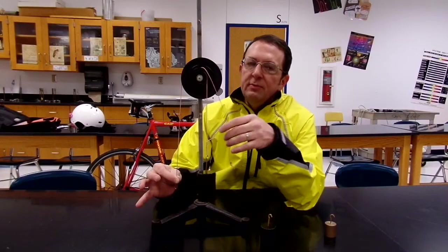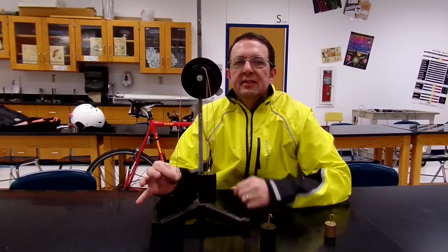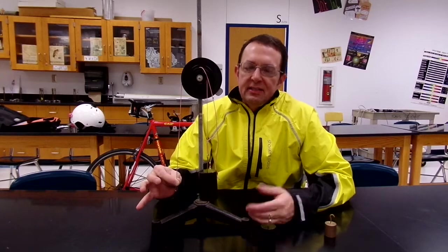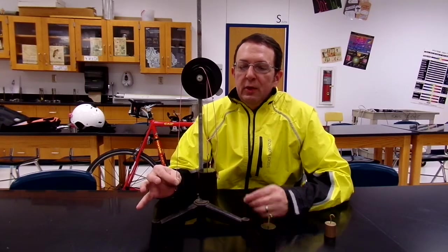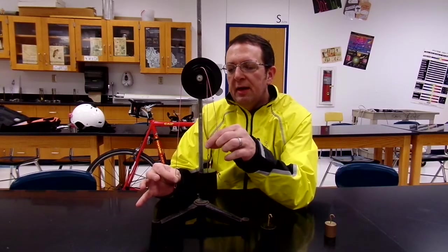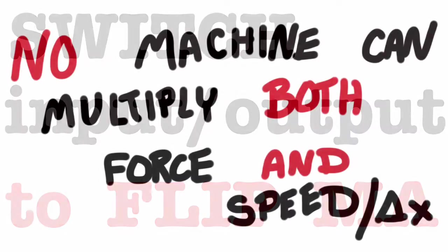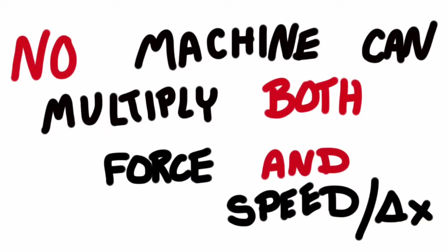Now with all these machines, what you can do to make this into a speed and displacement multiplier is just switch the input and the output — every time, just switch the input and output positions and you can invert the mechanical advantage. Remember, no machine can both multiply speed, displacement, and force at the same time.